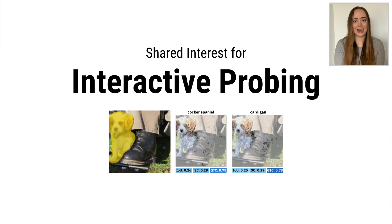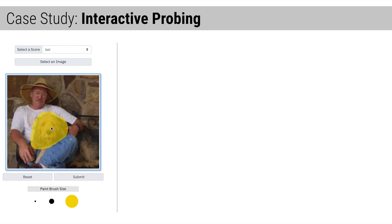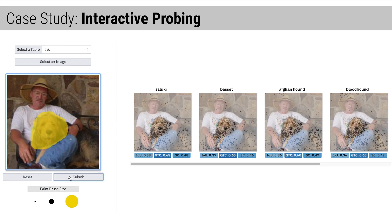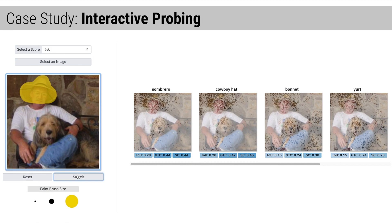Here, for example, we set the ground-truth to be the dog's face, and the interface returns the classes with the highest IOU coverage to that region. The returned classes are types of dogs, and the saliency for each class is focused on the dog, indicating the model has learned generalizable visual features of dogs. Next, we select the man's hat. Even though this image is labeled otterhound, the classes with the highest Shared Interest to the hat region are other types of hats, suggesting the model has also learned about secondary objects.